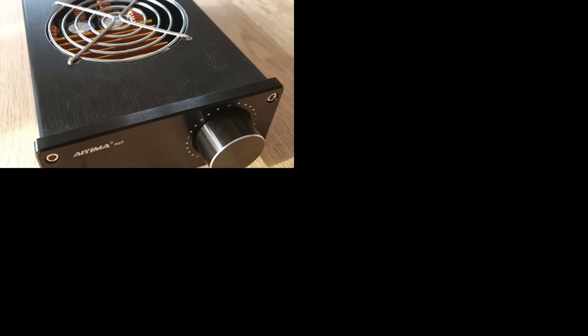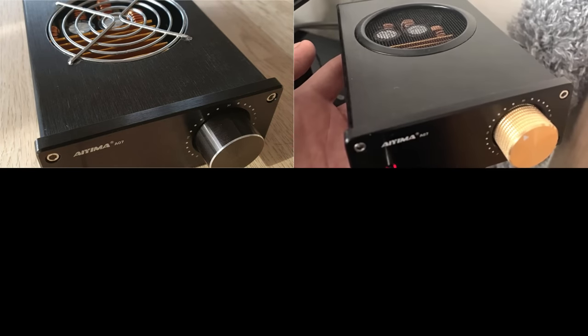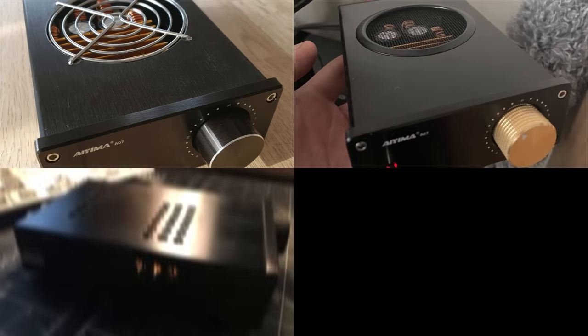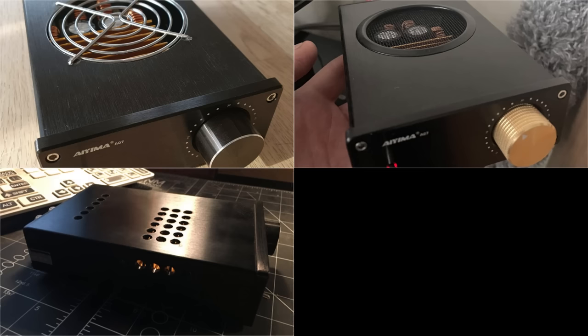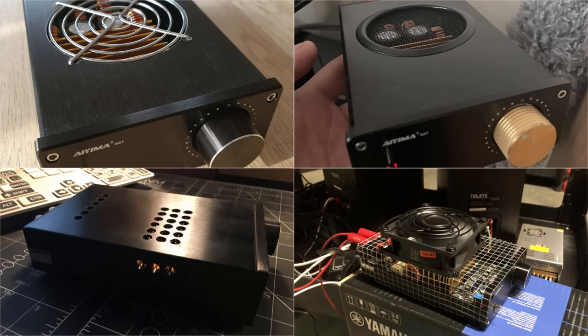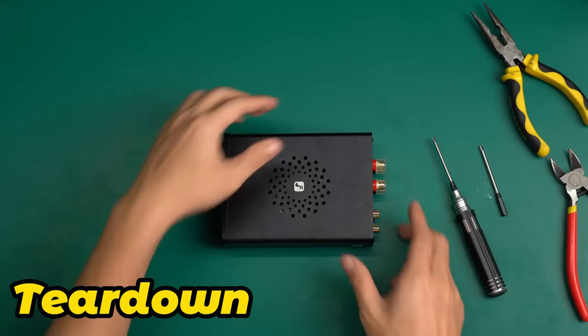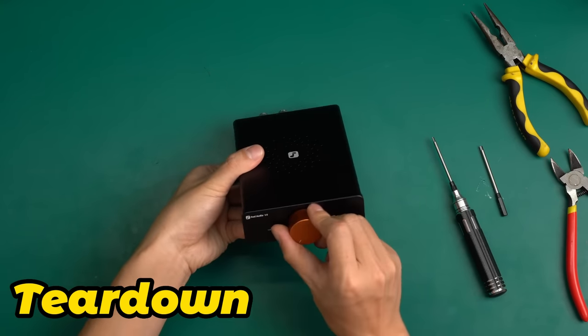Speaking of heat dissipation, A07 has frequently been criticized for its overheating problem. I saw some users DIY the casing to improve the cooling. As for how well the V3 performs in terms of heat dissipation, I will conduct a special test later. Next, I will tear down this V3 to see what it looks like inside.